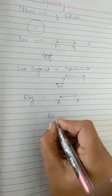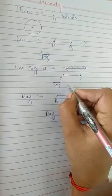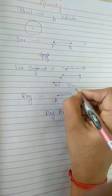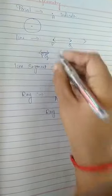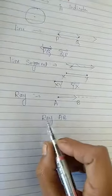So how to read this one? Read ray A, B. Here we can read line segment x, y, or line segment y, x, we can read. Here line P, Q, or line Q, P, we can read. But in a ray, it is not like that. We have to always read ray A, B only.